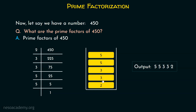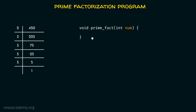Now, we will try to write a program to get this output. We will work with this example and write a program to find all the prime factors of this particular number. That particular program will be capable of finding prime factors of every possible number and will also print all the prime factors in descending order. We need a separate function called prime_fact — this is just a name I have selected, you can take any name of your choice.